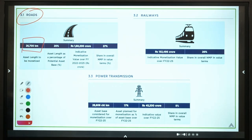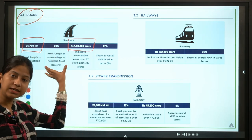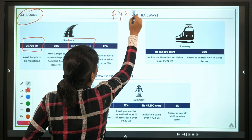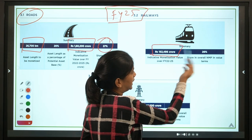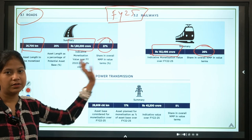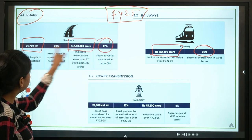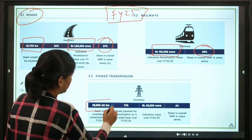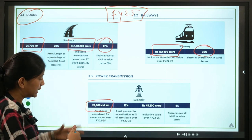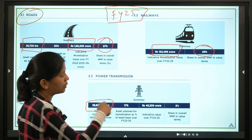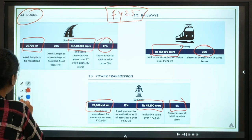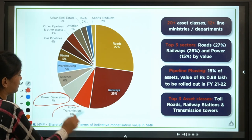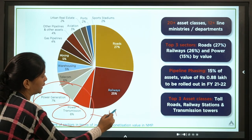For roads, a specific number of kilometers will be monetized to collect the targeted amount — this is the total target up to FY25, with roads contributing 27%. For railways, remember the contribution percentage and collection amount. For power, the sector is split into power transmission and power generation; transmission grid lines contribute 8%, and collectively the power sector contributes 15%.